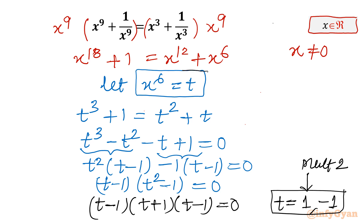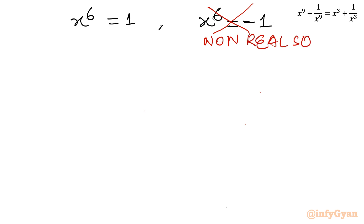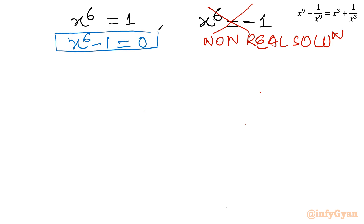Now I will put back our substitution t = x⁶, and our target is to find real solutions only. So I write x⁶ = 1 and the second equation x⁶ = -1. I will reject the second one immediately, because x raised to an even power cannot be a negative value — that gives non-real solutions. So I will reject this immediately.